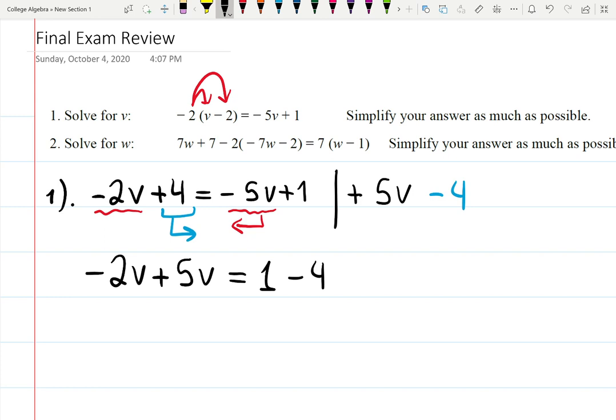-2v+5v is 3v. 1-4 is -3. Divide by 3, v is -1. Put it in the box. So that is the solution for problem number 1.